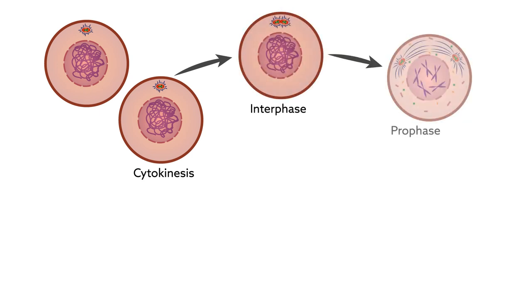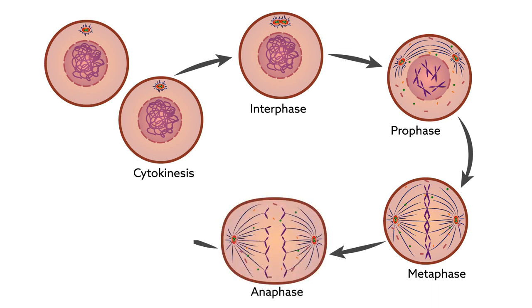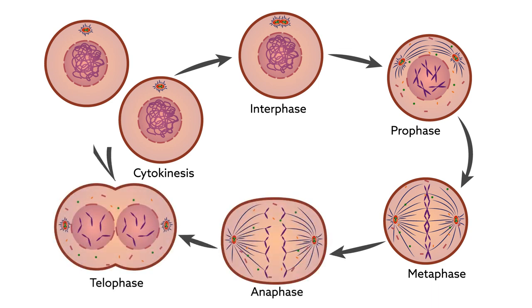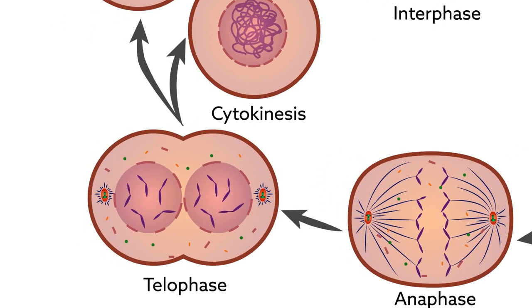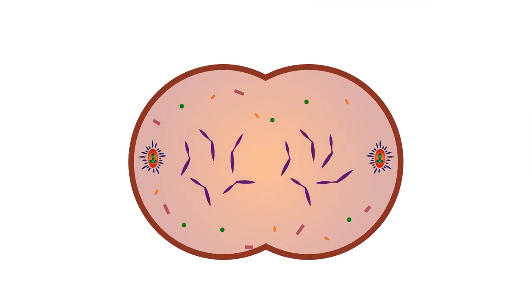Now researchers have followed progerin as it wreaks its disruptive effects on the cells of patients with progeria throughout the entire cell division process. Compared with normal cells, cells containing progerin trapped structural components of the nuclear membrane from reaching their required post during cell division.